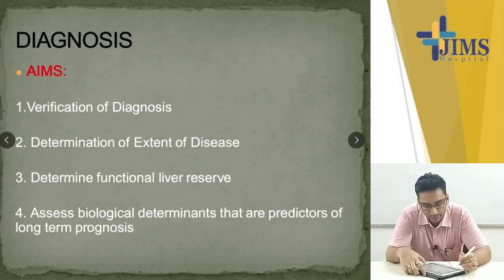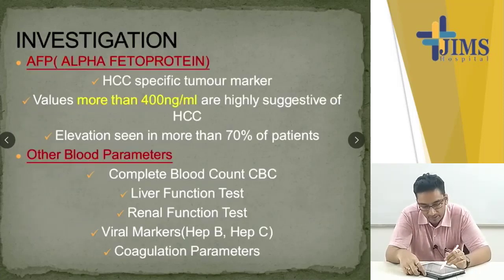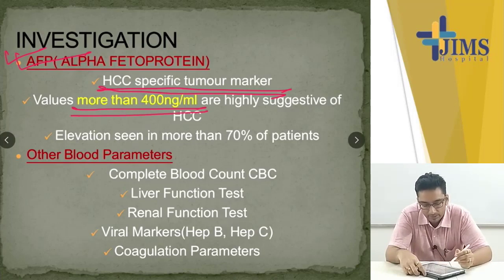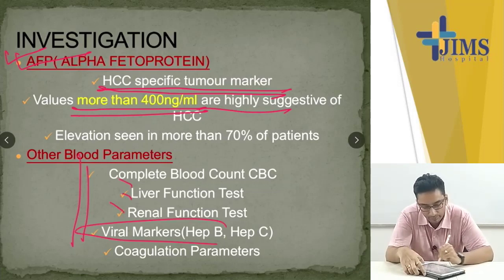For diagnosis, you first have to verify the diagnosis, determine the extent, determine functional liver reserve, and assess biological determinants. Alpha-fetoprotein is an important tumor marker for HCC — more than 400 nanograms per milliliter is highly suggestive. Other blood parameters include CBC, LFT, RFT, viral markers, and very importantly, coagulation parameters.